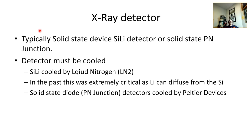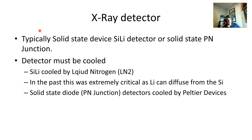X-ray detectors are typically solid-state devices. The Si(Li) detector is cooled by liquid nitrogen — if you see a scope with a big liquid nitrogen tank, that's a good sign it uses a Si(Li) detector. In the past you had to cool it 24/7 or the lithium would diffuse out of the silicon. Modern solid-state diode detectors run less hot and can be cooled by a Peltier device, like what you find in a wine fridge.